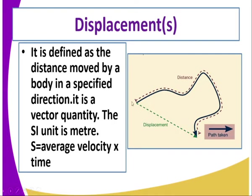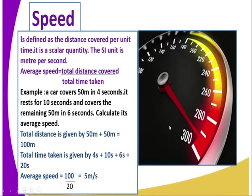The abbreviation for displacement is S, given by average velocity multiplied by time taken. When you consider the path illustrated here, the distance covered by a body around this path and the total displacement of the body from this point to this point is what we refer to as displacement. Speed is defined as distance covered per unit time. It is a scalar quantity, and the SI unit is meters per second.